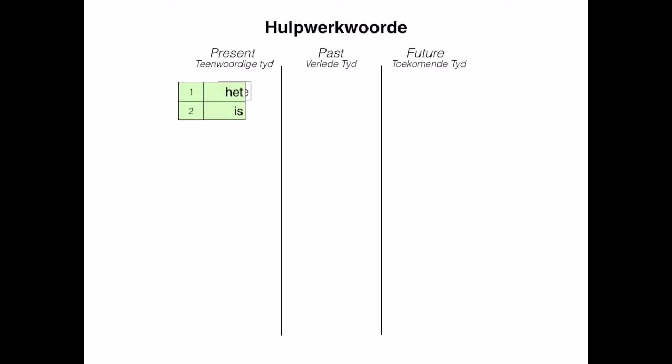In the present tense (teenwoordige tyd), we have het and is — het meaning 'have' and is meaning 'is'. For their past tense versions, we have het gehad, and is changes into was.